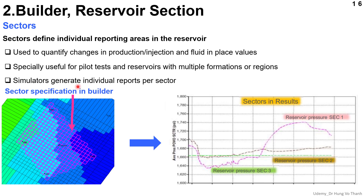Now we go to the sector simulation session. Sector simulation helps you to perform pilot tests inside a large field model. In real fields we have very large numbers of grid cells — some fields have millions, 10 million, or even 100 million grid cells. In order to save time for analysis, you can divide the reservoir into multiple sectors, build a robust model for each sector, and perform simulation directly. The result will be shown for each sector you have defined, which is very convenient for investigating specific areas in the reservoir.